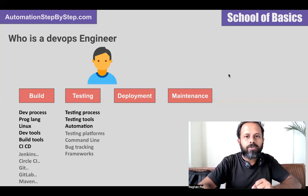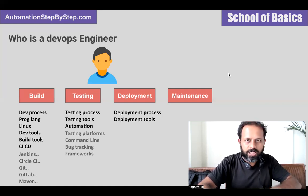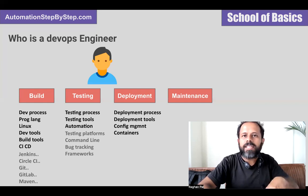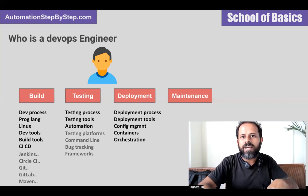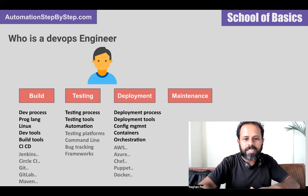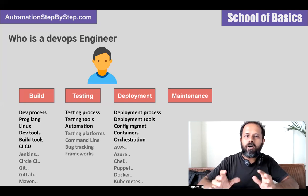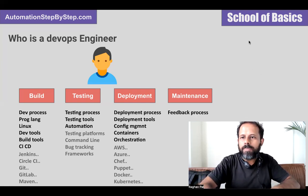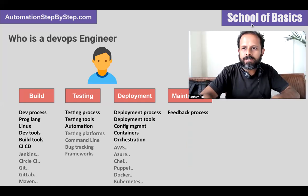Coming to the deployment phase, the DevOps engineer will understand the deployment process: how it is done, what the stages are, and what tools are being used. Are we using any configuration tools or provisioning tools? What does the configuration management process look like? In case we are using any containers like Docker, or any orchestration tools like Kubernetes, he or she will have knowledge about all these. Tools include AWS, Azure, Chef, Puppet, Ansible, Docker, and Kubernetes.